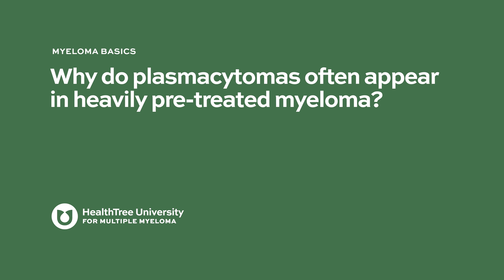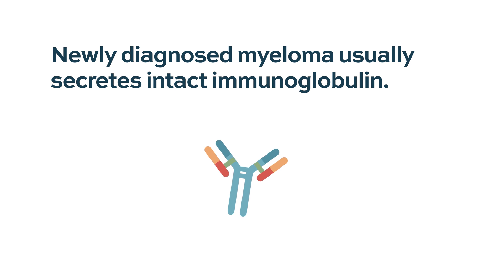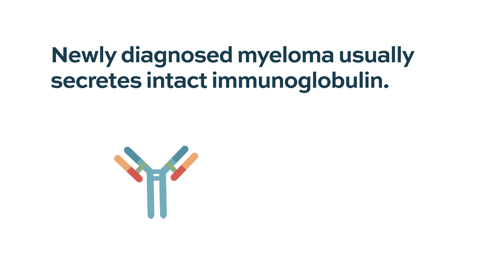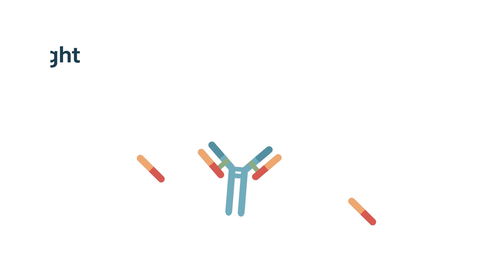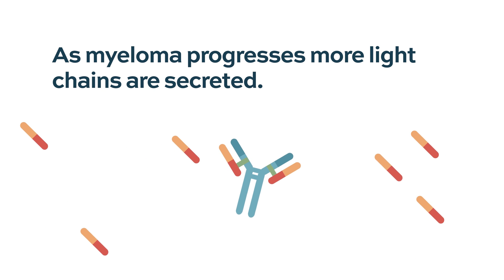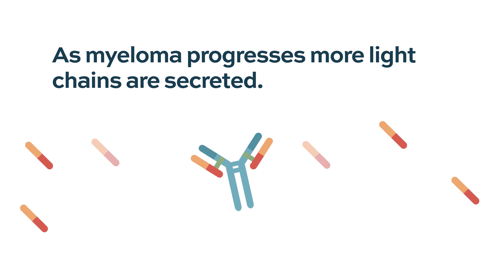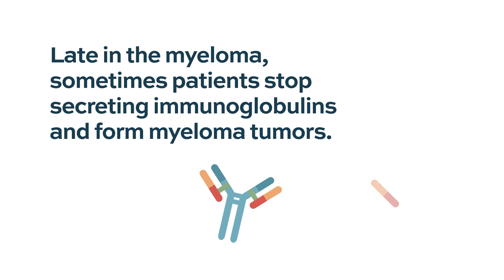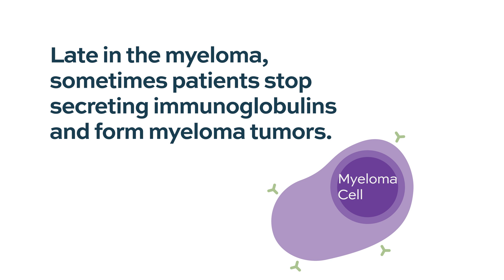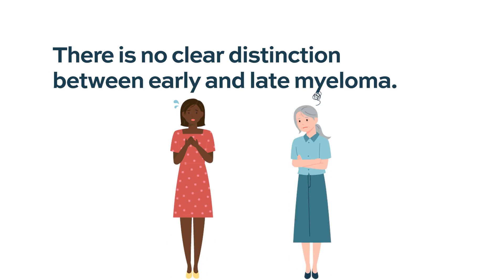Normal plasma cells secrete more or less the same amount of heavy chain and light chain, forming the immunoglobulin molecule. As disease progresses, cells start secreting more light chains — that's how you pick up Bence Jones protein in the urine or free light chain in the serum. As the disease becomes more aggressive, some cells stop making light chains and heavy chains entirely and become lymphoma-like disease, forming tumors in soft tissue or bones. There is no clear distinction between what represents early versus late myeloma, and plasmacytomas can be present at multiple stages of the disease.